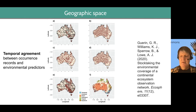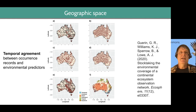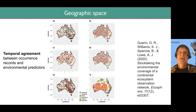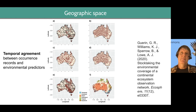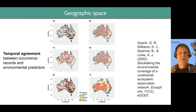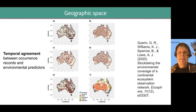A lot of these databases will have records from the 1800s, but it's likely that you're not interested in those records. First of all, they're highly imprecise in terms of where on the planet that actual record was collected because they didn't have GPS back then. But they're also often not reflective of the environment which you're trying to represent with your environmental variables.